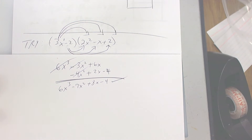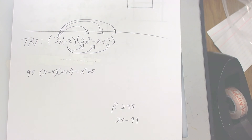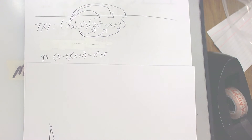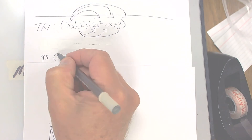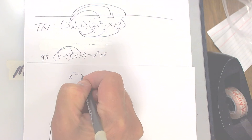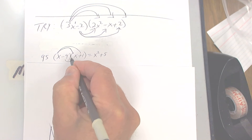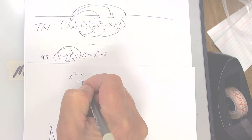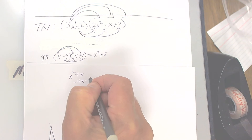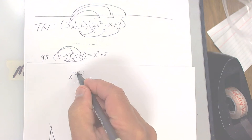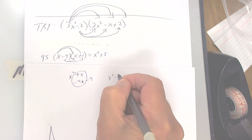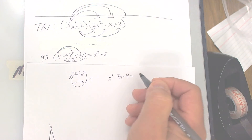All right, this one right here is number 95. You're going to first do FOIL: x times x is x squared, plus x. Go to the next one: negative four x. And then go to the last one: negative four. So this gives you a negative three, and it's going to be x squared minus three x minus four.